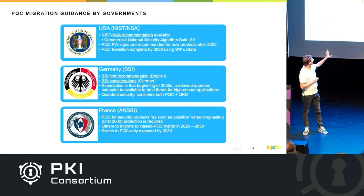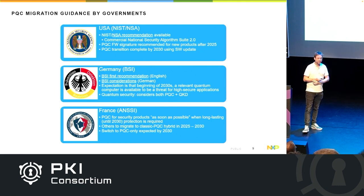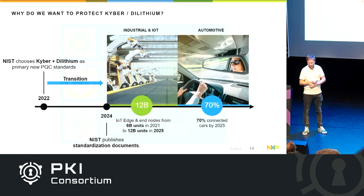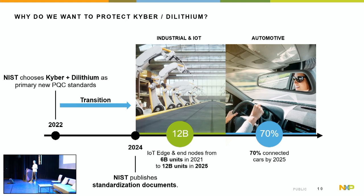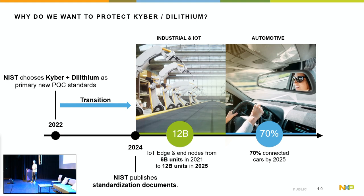Besides standardization, we saw all the migration documents yesterday, and I won't dwell on those since the representatives did an amazing job summarizing their guidance. But what does the migration mean for embedded applications in practice? We take a key exchange algorithm and a signature algorithm as the primary new PQC standards and want to transition starting next year when the standards come out. Our focus in embedded is mainly on industrial IoT and automotive, where we expect many units needing secure connections. Cars being built today will be in the field for at least a decade, so we already needed to build in post-quantum support a couple of years ago.